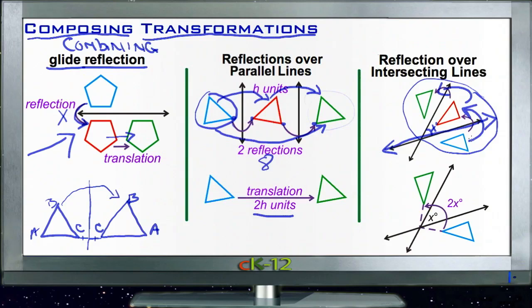The same result going from blue to green occurs if I were just to take my original blue figure and rotate it by twice whatever that inside angle was. So if my original reflection from blue to red was around an angle of 40 degrees, and then I do it again around an angle that's another 40 degrees, I could have just rotated the original figure 40 plus 40, or 80 degrees.